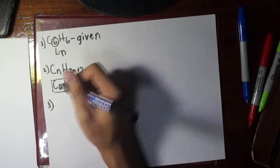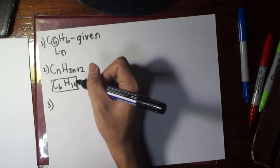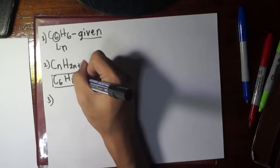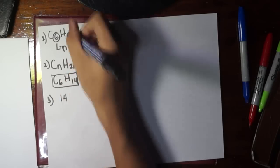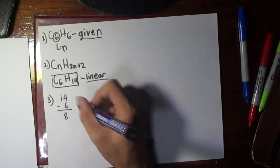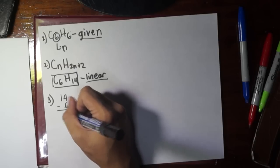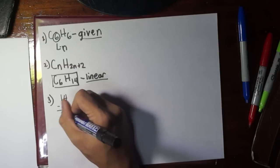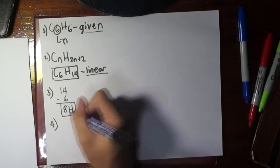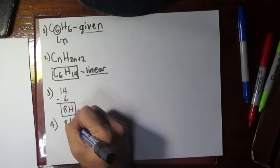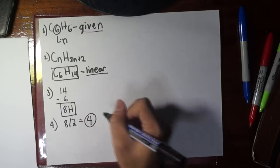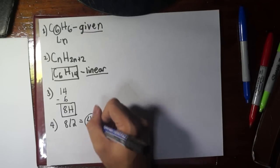The next step is to subtract the number of hydrogens from the given to the number of hydrogens in the linear alkane. If we have 14 and we have 6, we get the difference, which is 8. This is the deficiency in hydrogens. Usually what people do is divide this further by 2 to give a product of 4.